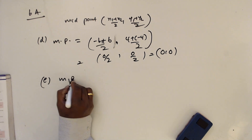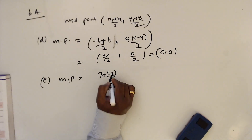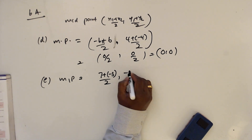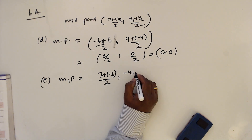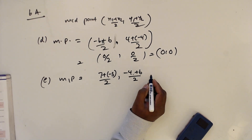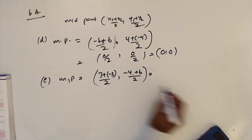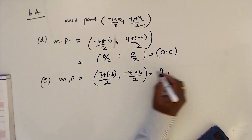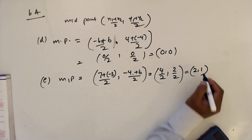Part e: midpoint uses x values 7 plus minus 3 divided by 2, and y values minus 6 minus 4 plus 6 plus 6 divided by 2. So this is going to be 7 minus 3 = 4, divided by 2, which gives 2. The midpoint is (2, 1).